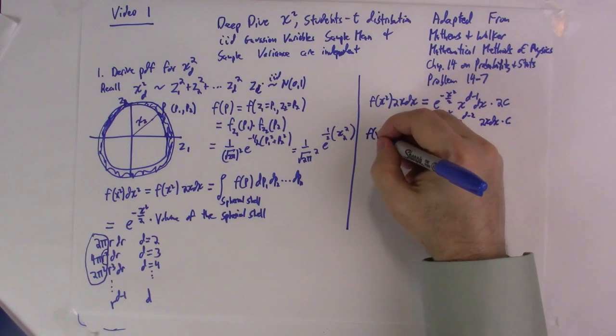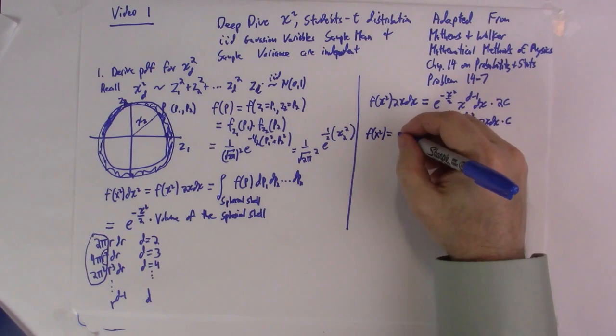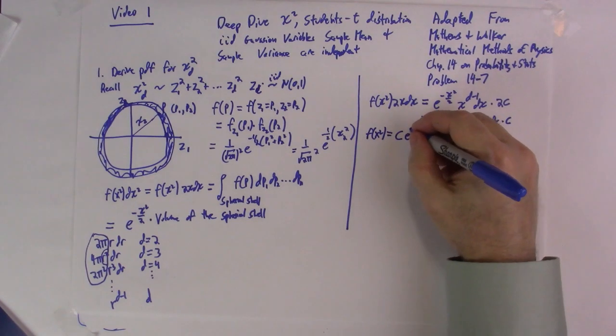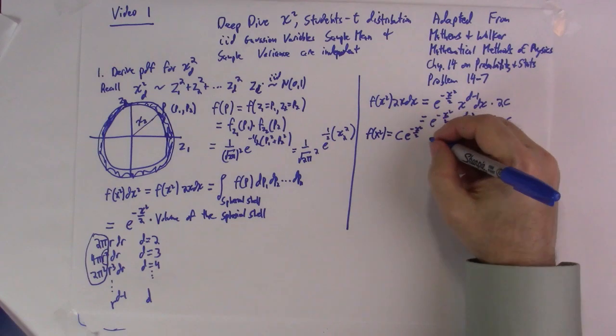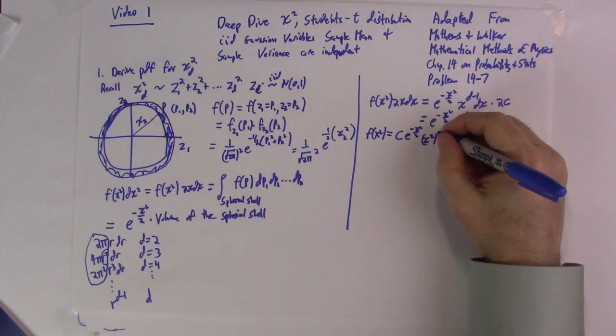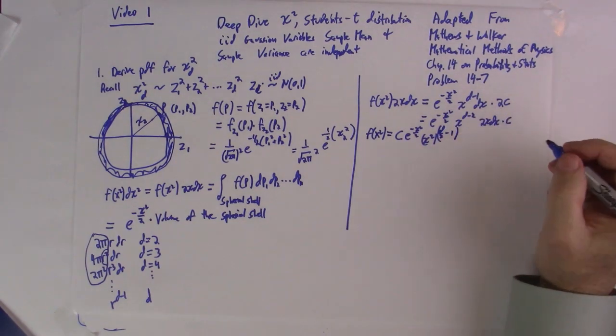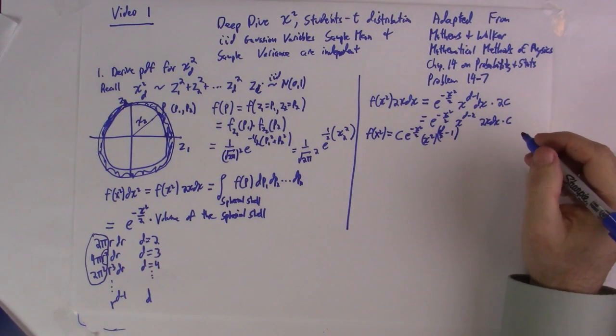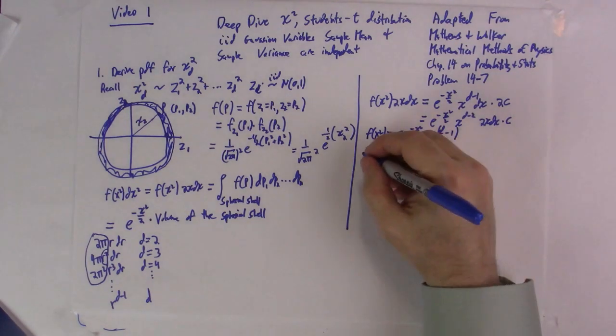So, that implies f of chi-squared is equal to a constant times e to the minus chi-squared over 2, chi-squared to the d over 2 minus 1. Okay. To evaluate this, we'll just integrate over all space.